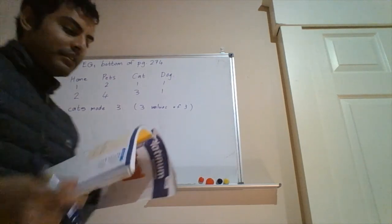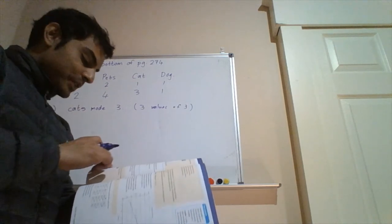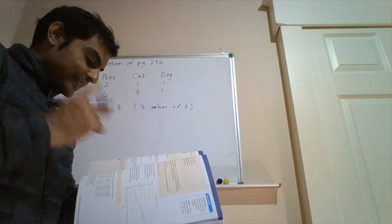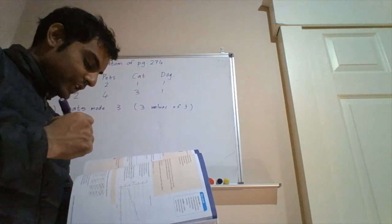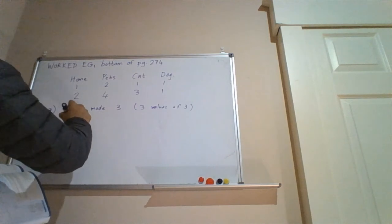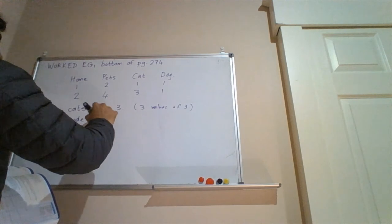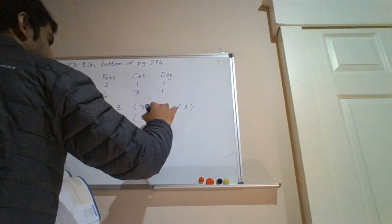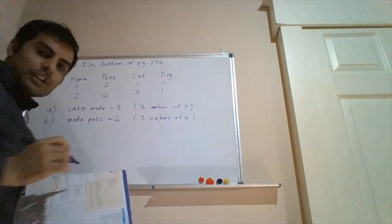For B, it asks us the mode for the pets data values. So we look at the pets, we see there's one, there's two twos, there's three fours, two threes. So the mode, the most common value is going to be four. And there are three values of four. So pretty straightforward.